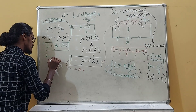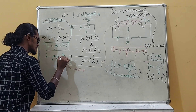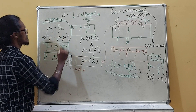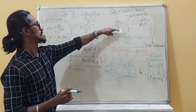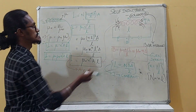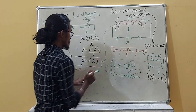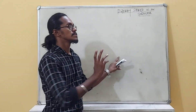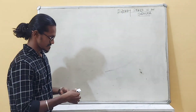L = μ₀μᵣN²Al is the self-inductance of a solenoid when a material with relative permeability μᵣ is inserted. This applies whenever there is a higher-permeability medium inside. The next topic is energy stored in an inductor.